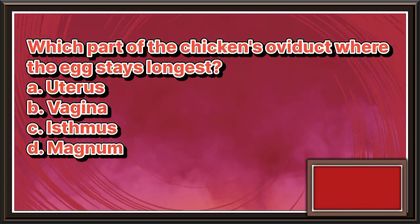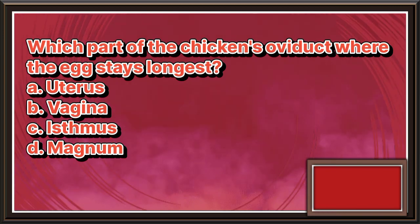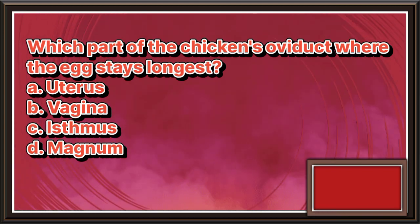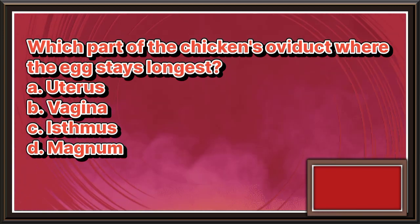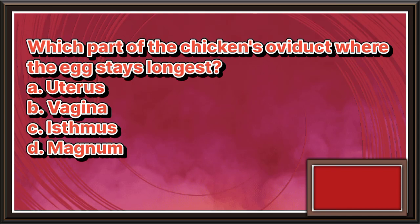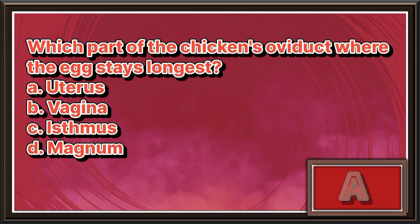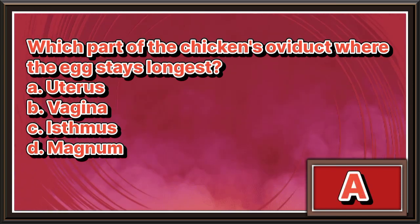Which part of the chicken's oviduct is where the egg stays longest? a. Uterus. b. Vagina. c. Isthmus. d. Magnum. The answer is letter a.